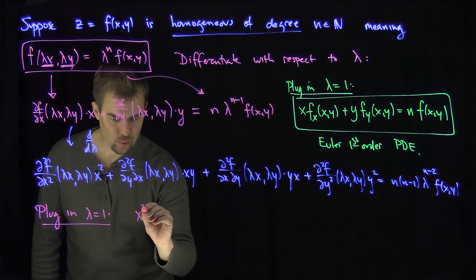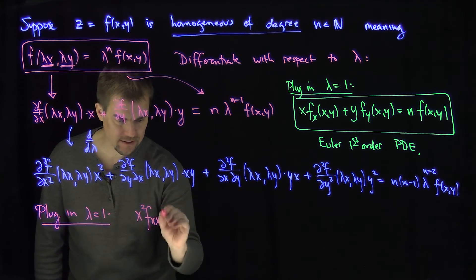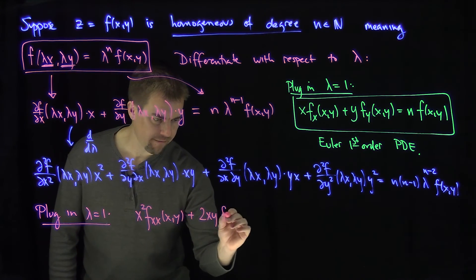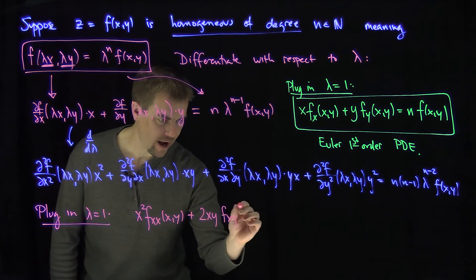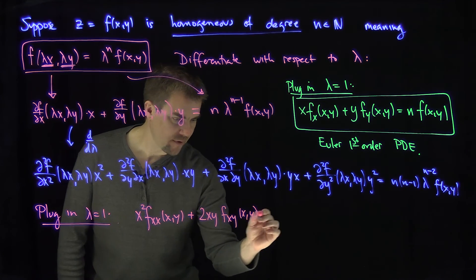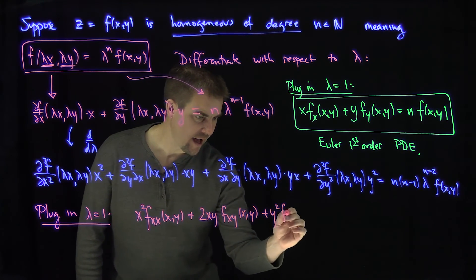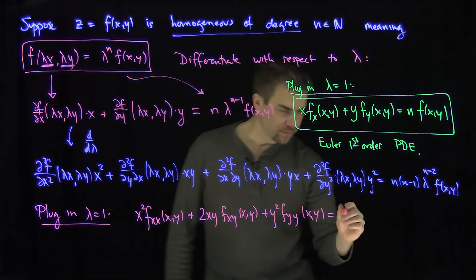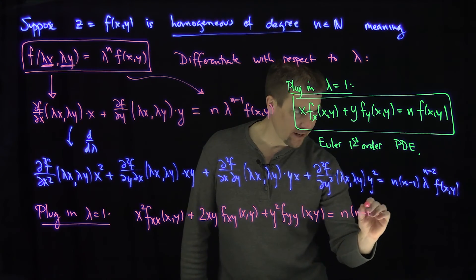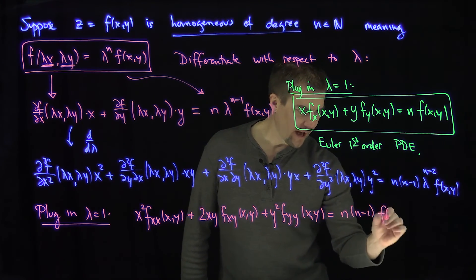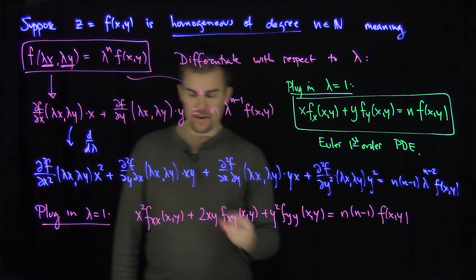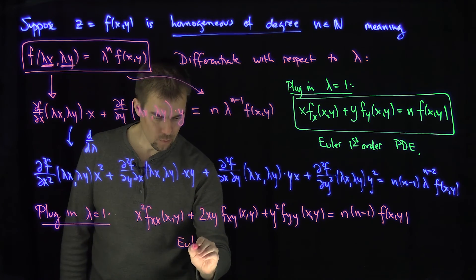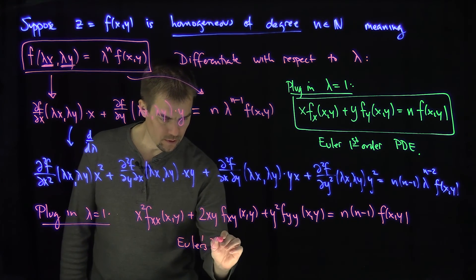Plugging in lambda equals 1, we get: x squared f_{xx}(x, y) plus 2xy f_{xy}(x, y) plus y squared f_{yy}(x, y) equals n(n minus 1) f(x, y). This is Euler's second-order PDE.